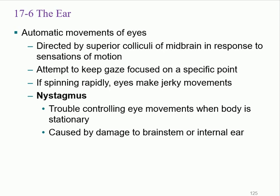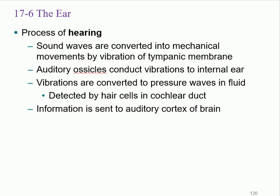A condition called nystagmus occurs when a person cannot fix their gaze — the eyes keep moving left, right, left, right and cannot focus. This indicates an issue in the brain stem, specifically in the midbrain colliculus, or possibly in the internal ear. The internal ear can send a false signal indicating you're moving, causing that involuntary eye movement. Hearing, on the other hand, starts with air pressure — sound is air waves of different lengths.